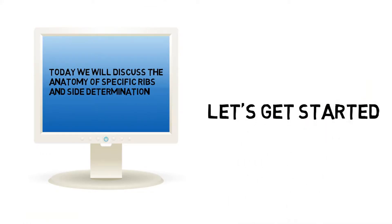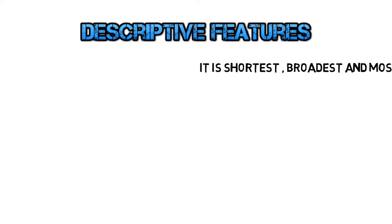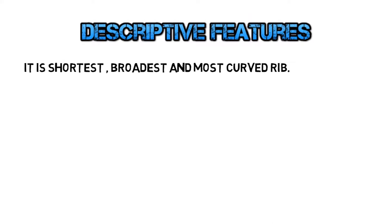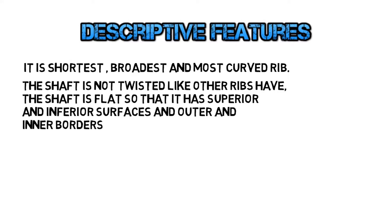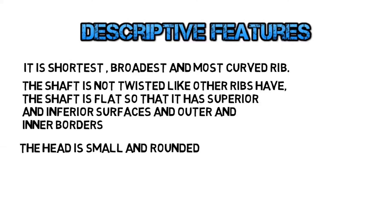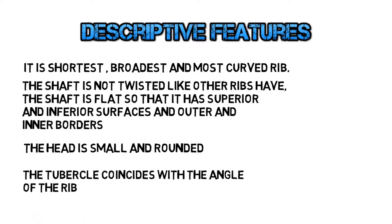First, let's discuss the descriptive features for the first rib. It is the shortest, broadest, and most curved rib. The shaft is not twisted like other ribs and is flat, so it has superior and inferior surfaces and outer and inner borders. The head of the rib is small and rounded, and the tubercle coincides with the angle.